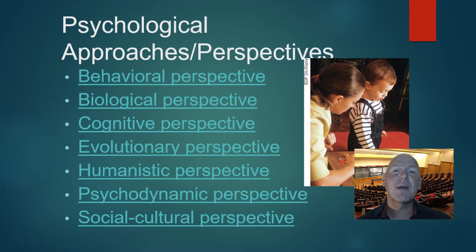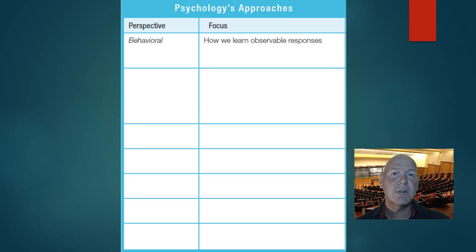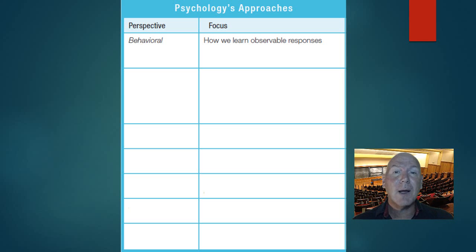Our approaches and perspectives include behavioral, biological, cognitive, evolutionary, humanistic, psychodynamic, and sociocultural. Behavioral is how we learn observable responses — when we see somebody react to something, or somebody keeps returning to a behavior that's bad for them. How does that happen? That's a behavioral perspective — what is reinforcing that person to continue doing that?